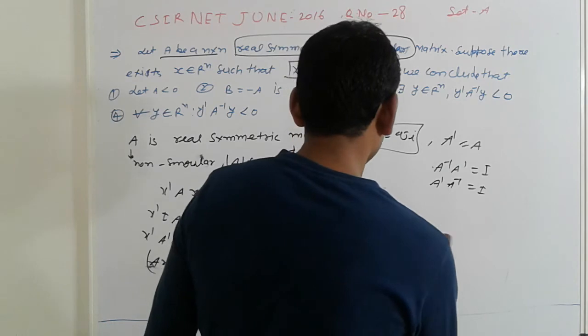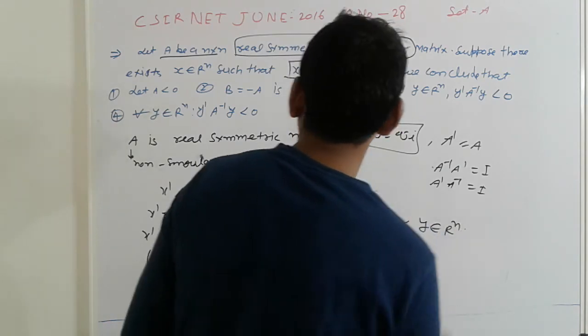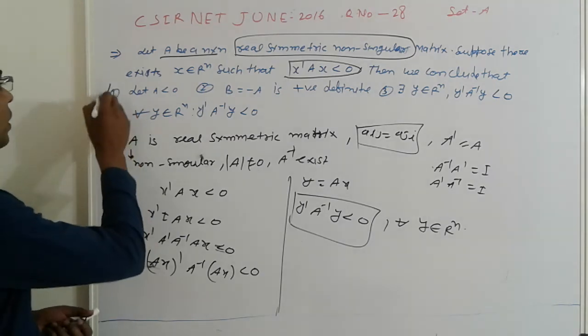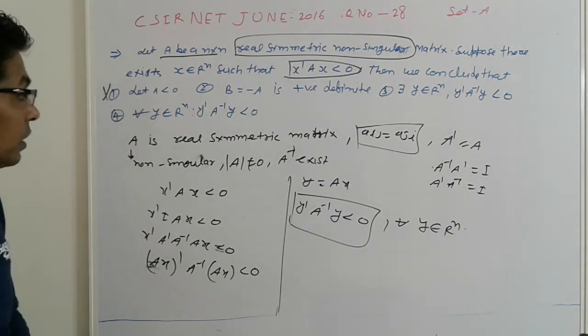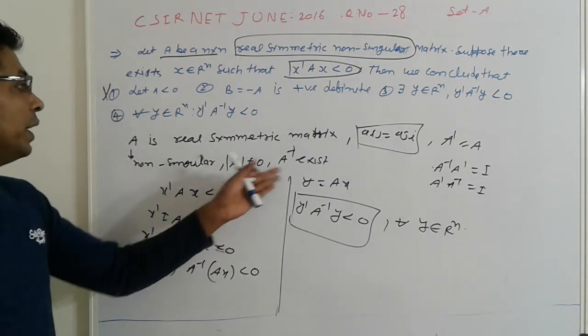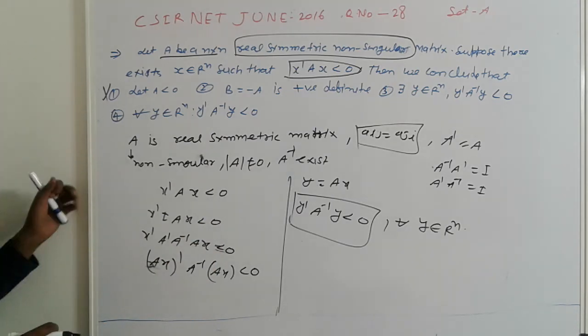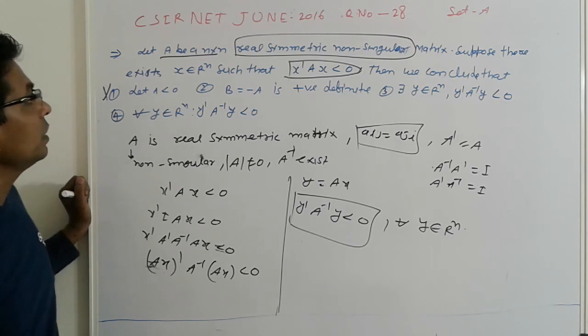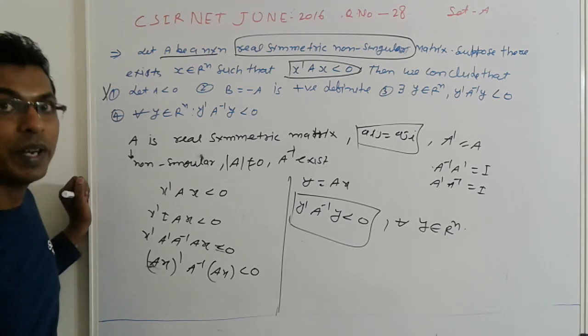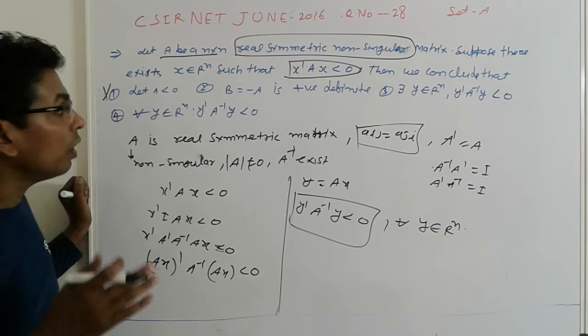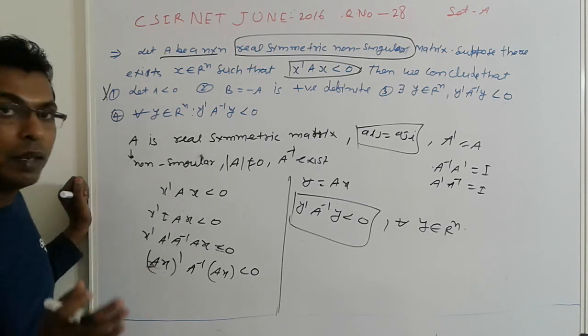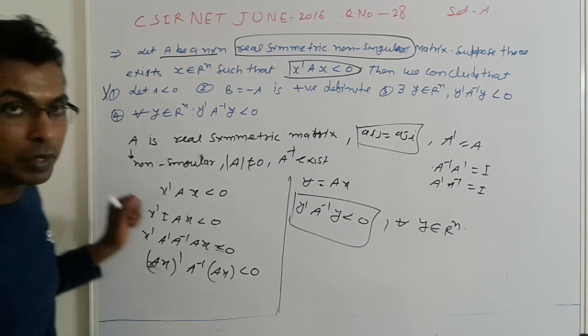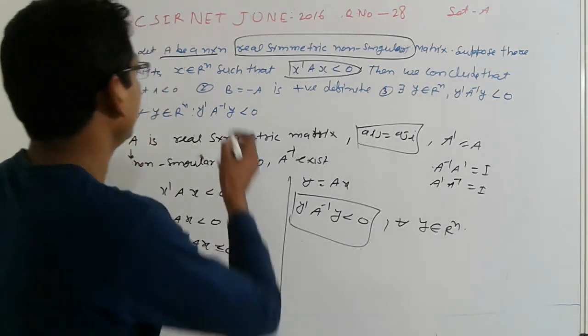So here simple, determinant is not equal to 0. It is not equal to 0, let's not less than. B is equal to minus is positive definite. Positive definite means all the diagonal elements is positive and determinant also positive. But every case is not possible.